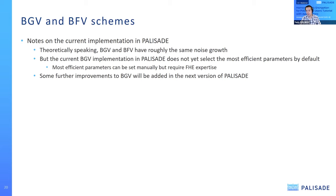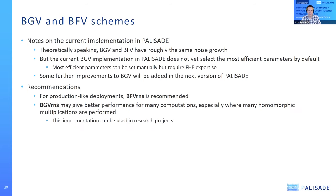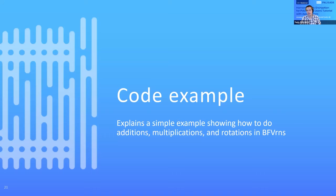In view of all of the above, for production-like scenarios we recommend using BFV-RNS for now. If better performance is needed — especially for research projects or prototypes — BGV-RNS would probably give better performance. It's computation-specific: if speed is the main requirement, BGV-RNS will probably give better performance. This concludes the discussion of scheme selection.